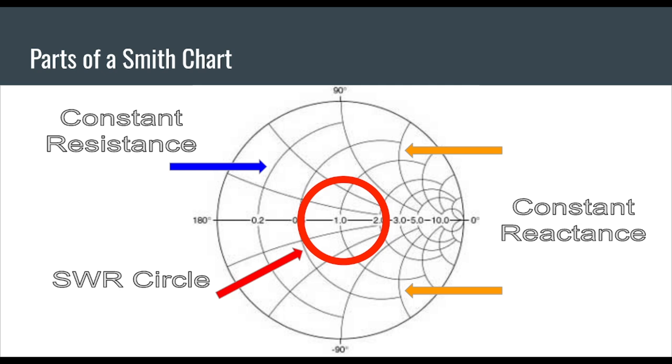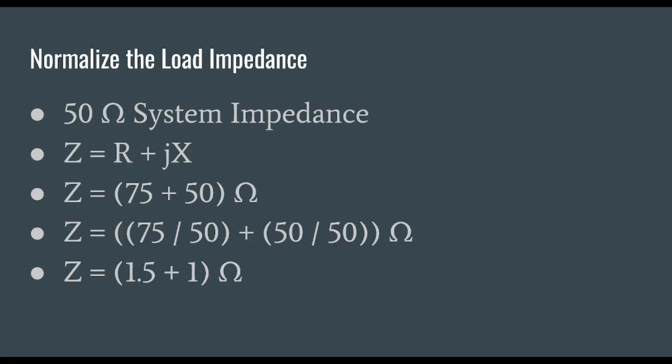We do this by plotting our complex impedance and drawing this circle. Any point on this circle will have the same SWR. The impedance will change with frequency but the overall SWR will not change.